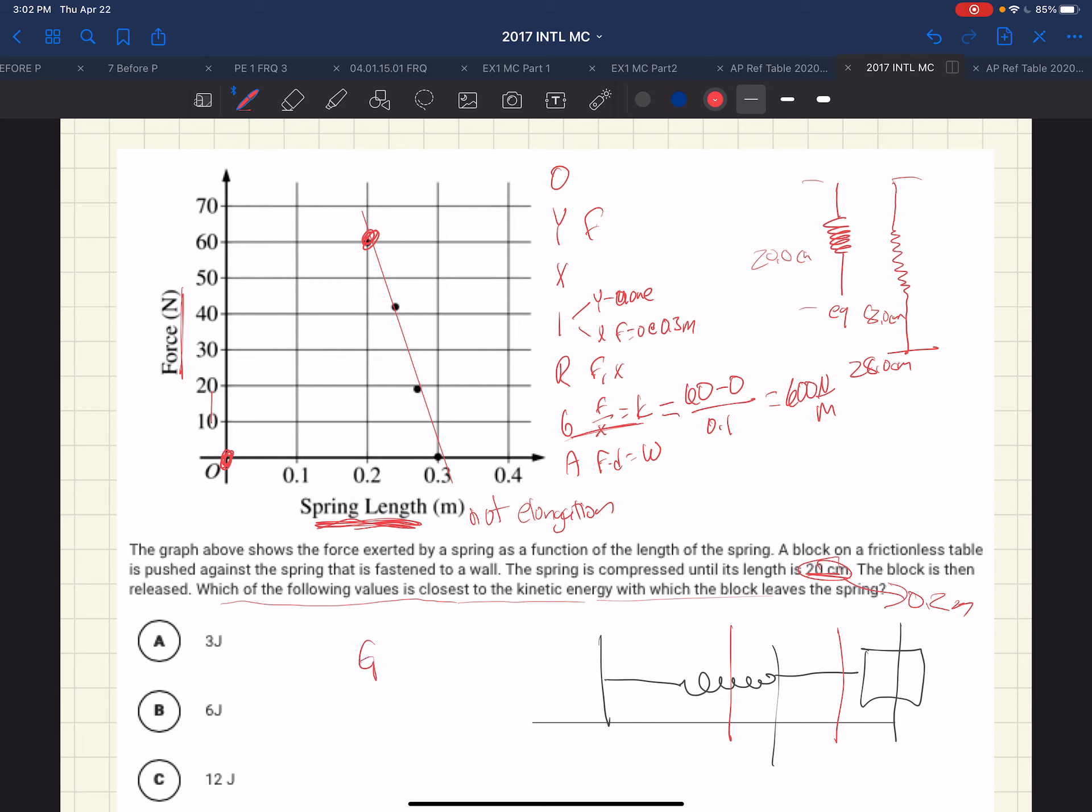And so the potential energy of the spring is 1 half kx squared. So that's the energy, and that will be equal to the kinetic energy at the end. The elastic potential energy will become the kinetic energy. So we have 1 half times 600 times x squared. We changed its length by 0.2.